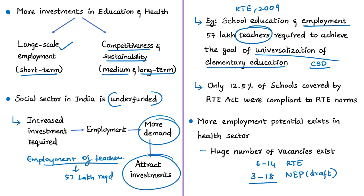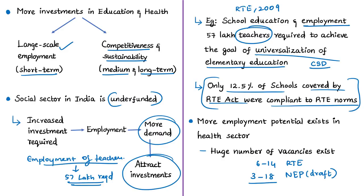If 57 lakh teachers are recruited over the next five years, it will help create huge-scale demand and address the economic slowdown. However, currently only about 12% of schools covered by the RTE Act are actually complying with RTE norms — even after almost 10 years since the Act's enforcement in 2009. If the provisions of the RTE Act and rules are met, there is huge potential for creating large-scale employment and thereby increasing demand in the economy.